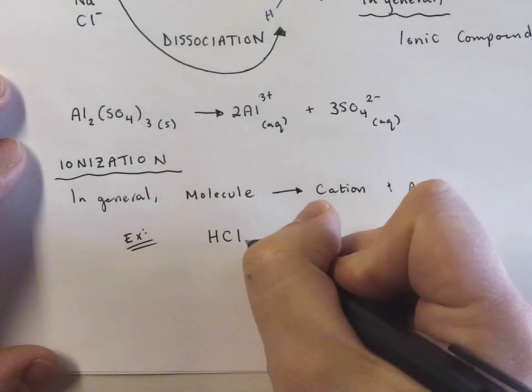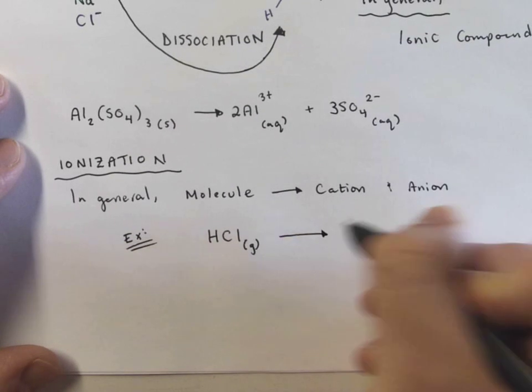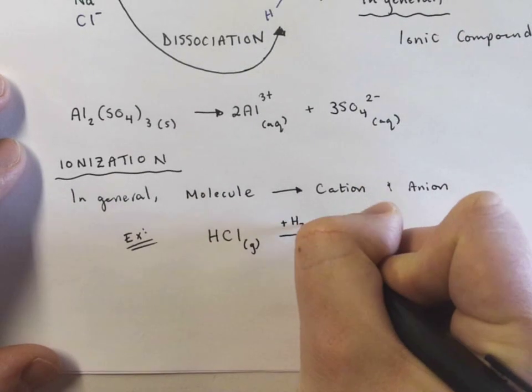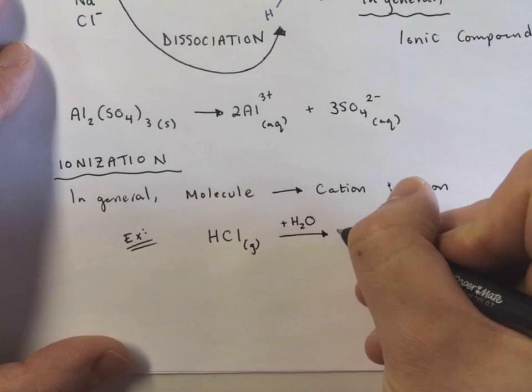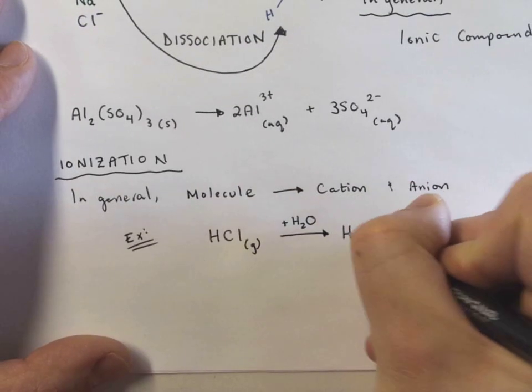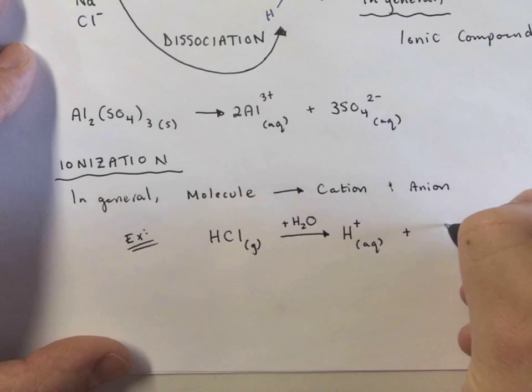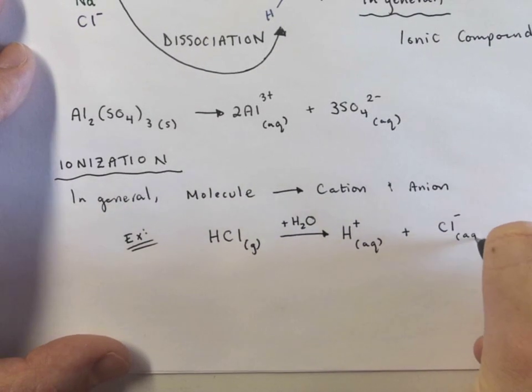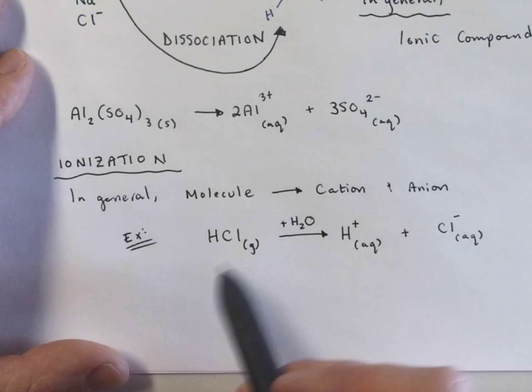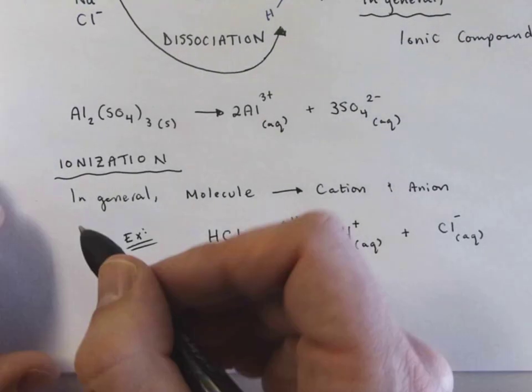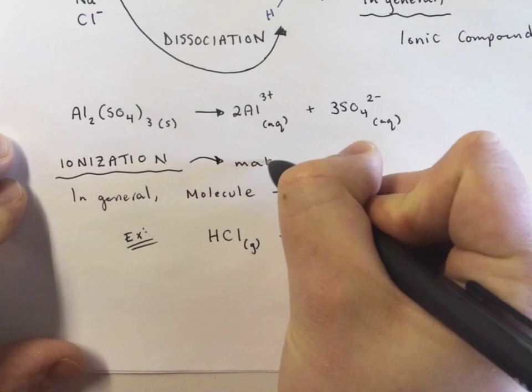So hydrogen chloride is at room temperature a gas. But if I put it in water and dissolve it in water, it turns into hydrogen ions and chloride ions. Now in reality, it's a little bit more technical than this, but I'm just trying to illustrate here what ionization means.